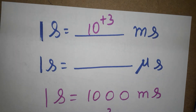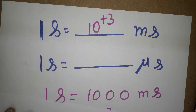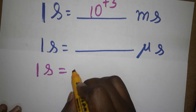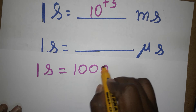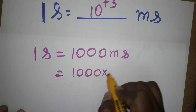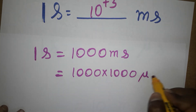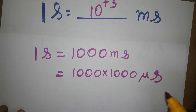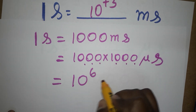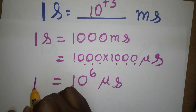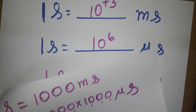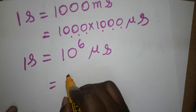Next, one second is equal to how many microseconds? One second is one thousand milliseconds, and one millisecond is again one thousand microseconds. So multiplying, we get 10 power 6 microseconds — that is 1 followed by six zeros. One second is equal to 10 power 6 microseconds.